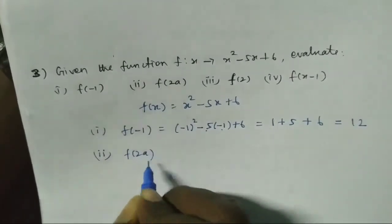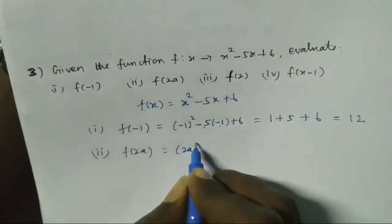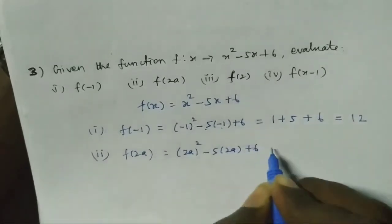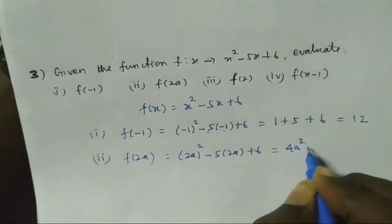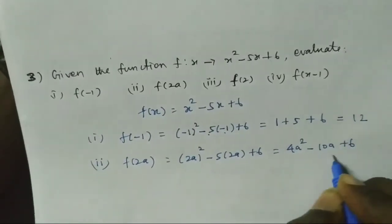Next is f(2a). So f(2a) = (2a)² - 5(2a) + 6. 2a square is 4a², minus 5 into 2a is minus 10a, plus 6. Answer: 4a² - 10a + 6.